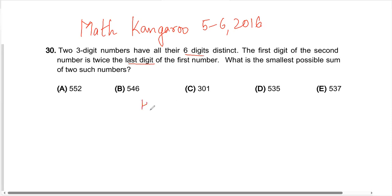So it means we have two numbers. You have hundreds, tens and ones, like a three-digit number. How many digits do we have in maths? We have 10 digits. These are my 10 digits and I have to use six of them because all of them are distinct. The condition here is that the first digit of the second number is twice the last digit of the first number.